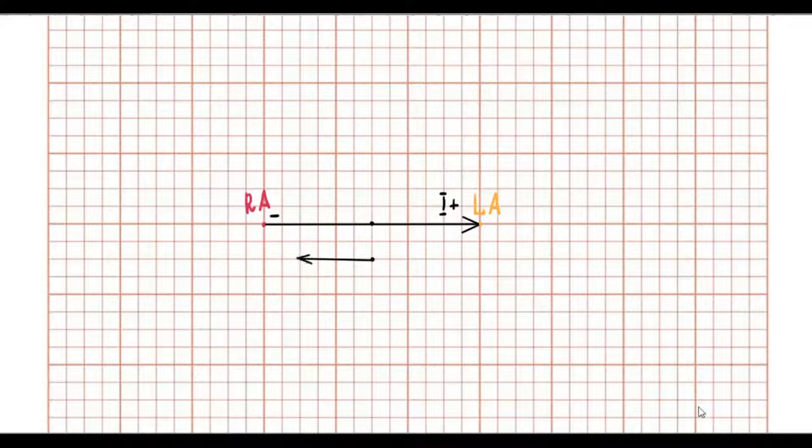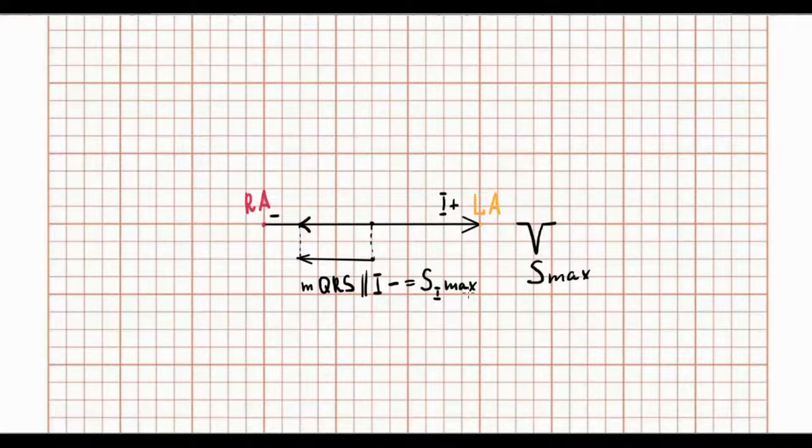If the direction of the mean QRS axis is parallel and oriented to the negative pole of a lead, in this case on the ECG the projection of this QRS makes a maximal S wave in this lead.